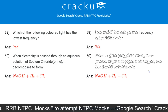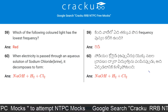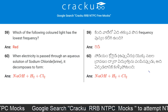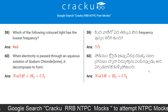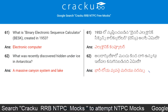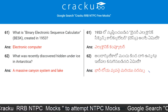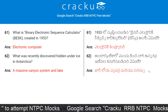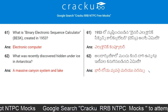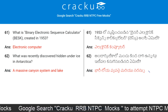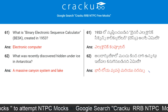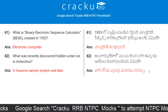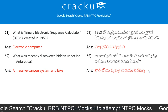When electricity is passed through an aqueous solution of sodium chloride, it decomposes to form NaOH + H₂ + Cl₂. What is the binary electronic sequence calculator created in 1953? Electronic computer. What was discovered hidden under ice in Antarctica? A massive canyon system and lake.